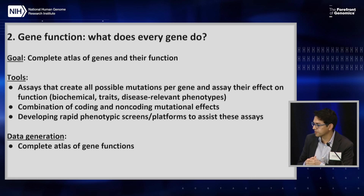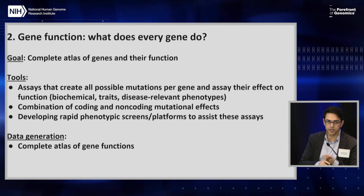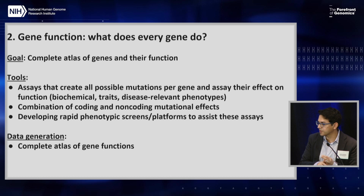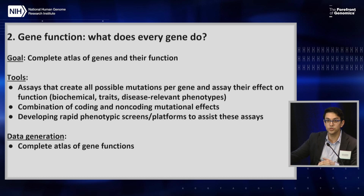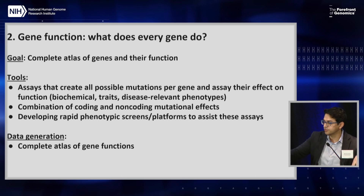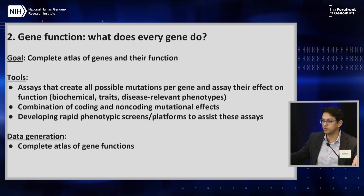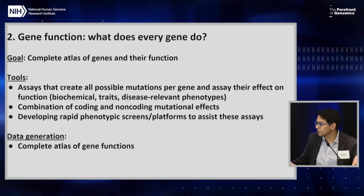There are endophenotypes like biochemical phenotypes — RNA expression, ATAC-seq, histone modifications. These are probably the one or two-year goals where we can pair gene manipulations with these kinds of genomic readouts. But we should also think about what other traits, what other disease-relevant phenotypes beyond cancer perhaps, we should focus on and can work on.